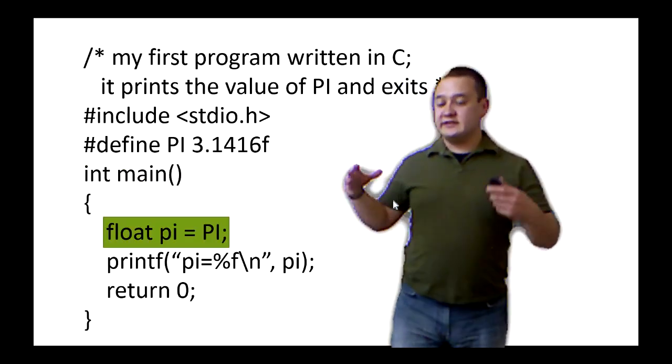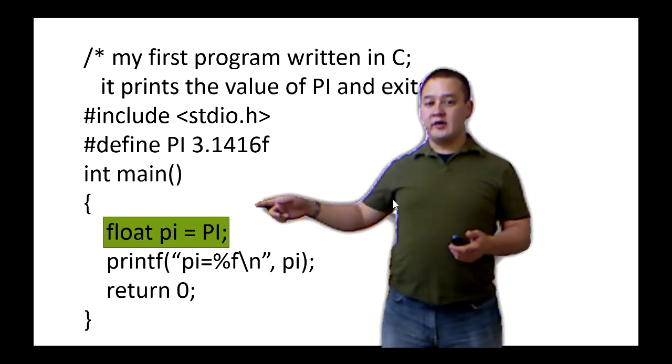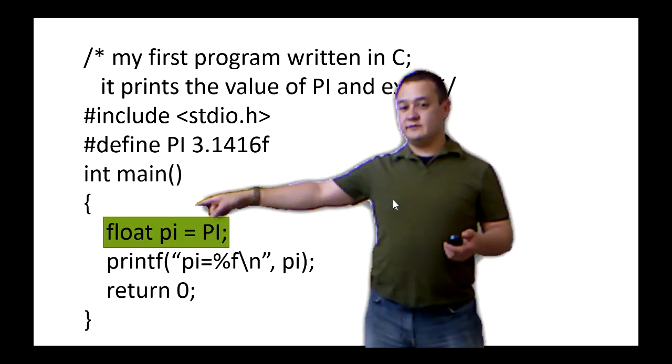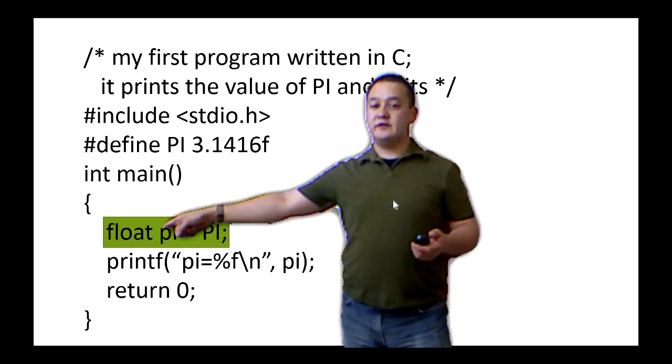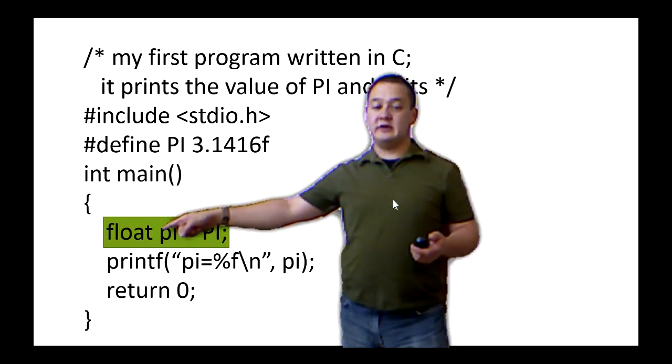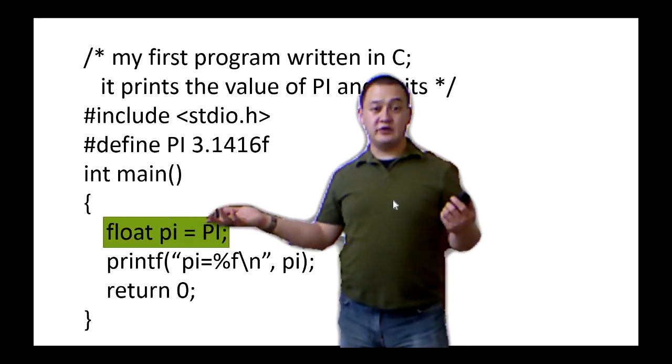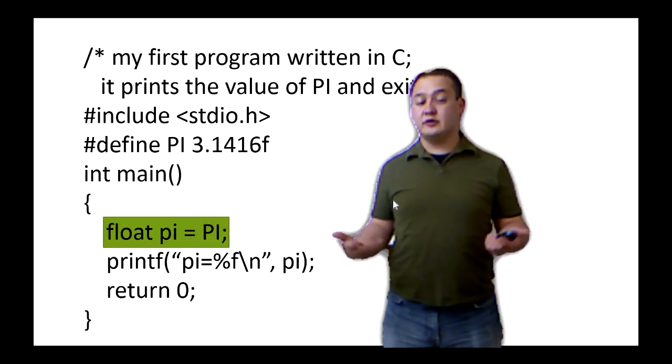Then inside this function, we're going to have things like variables. Variables, again, have several parts. First, you've got the word float here, which tells us the type of variable that we have. That means there's a floating point number, so it's going to be interpreted with IEEE standard, most likely.